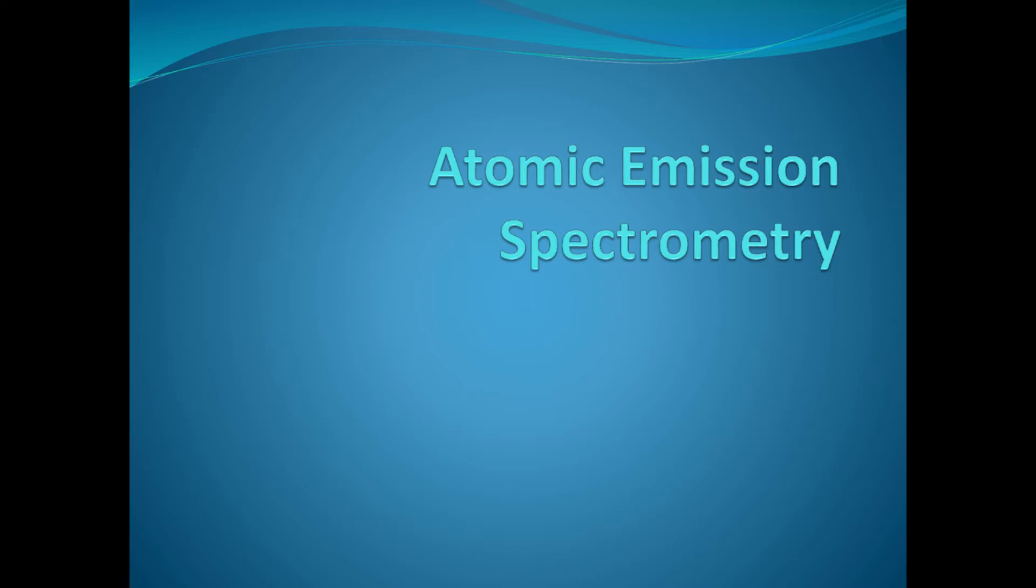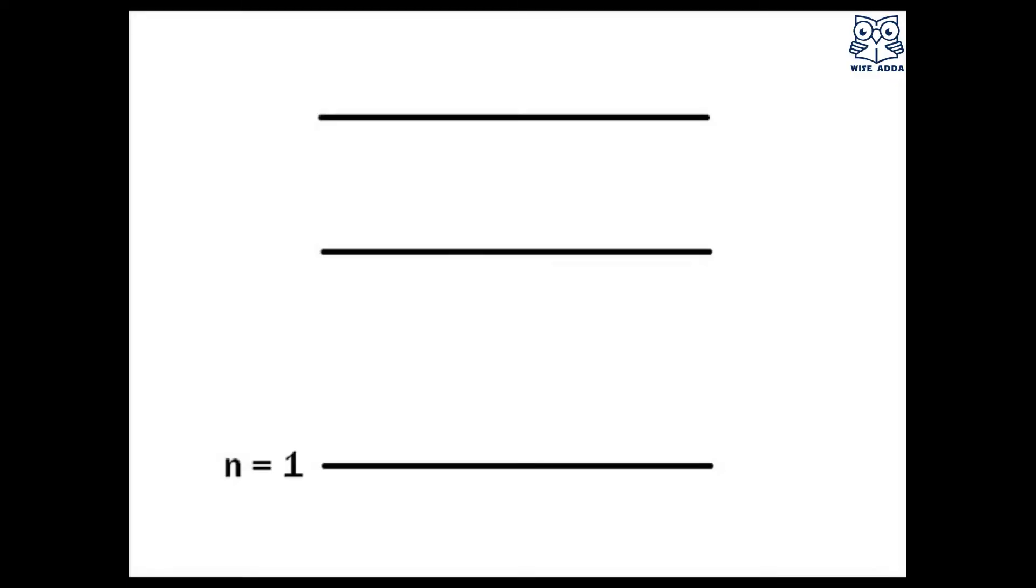So let's start without wasting any time. First of all, there are a few lines we draw. This is the ground state n=1, and n=2 and n=3 are excited states. So in the n=1 line, there are electrons.